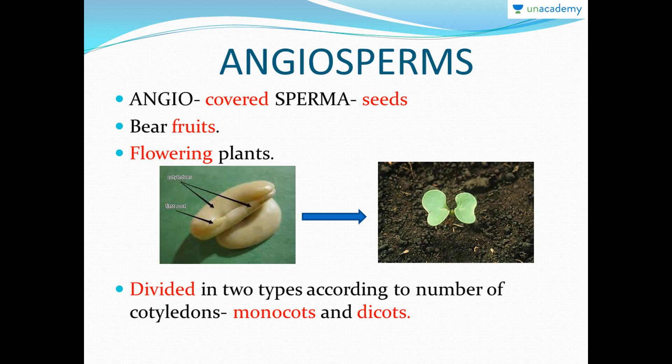Now, angiosperms. This is a vast group. Most of the fruit trees and all the trees we commonly see are actually angiosperms — they are the most modified, most differentiated type of plants. 'Angio' means covered and 'sperma' means seeds.